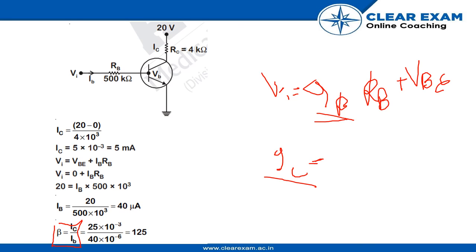The correct answer for this question would be beta is equals to 125, IC equals to 5 milliampere and IB is equal to 40 micro ampere.